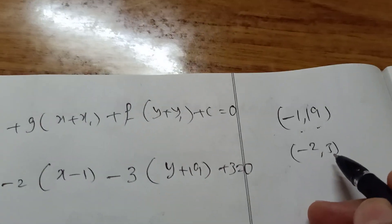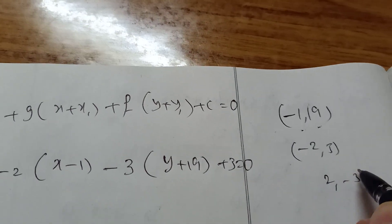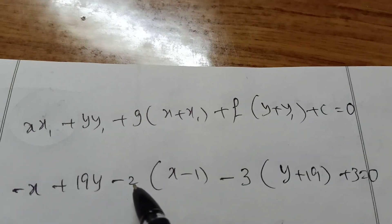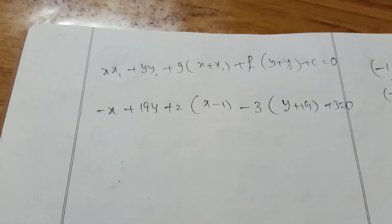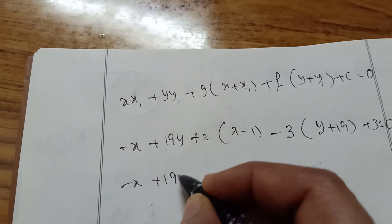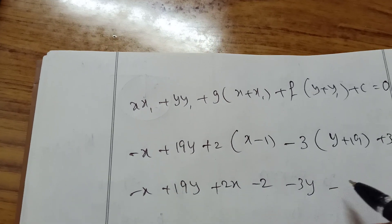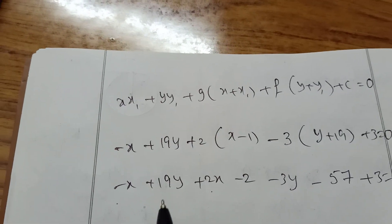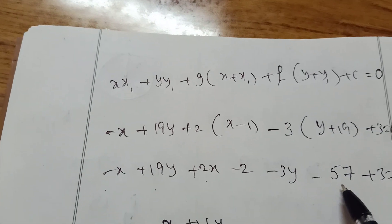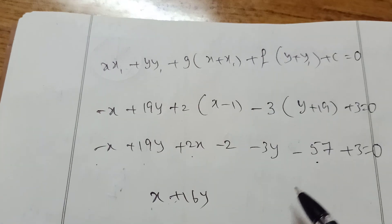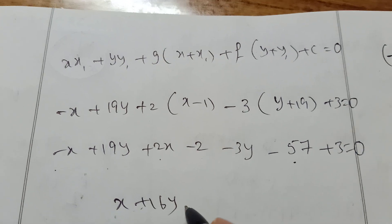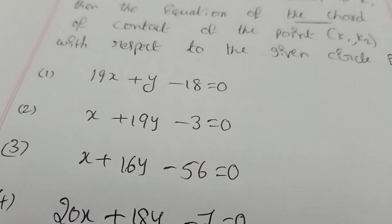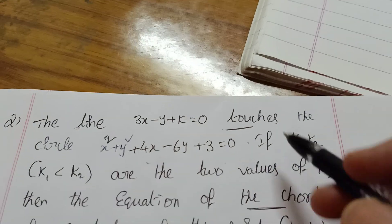Note: g and f are taken from the equation directly as +2 and −3 (not the center coordinates with opposite sign). Expanding: −x + 19y + 2x − 2 − 3y − 57 + 3 = 0. Simplifying: x + 16y − 56 = 0. This is option 3.